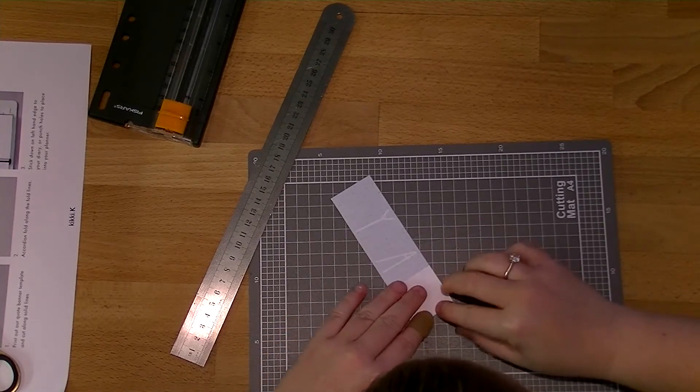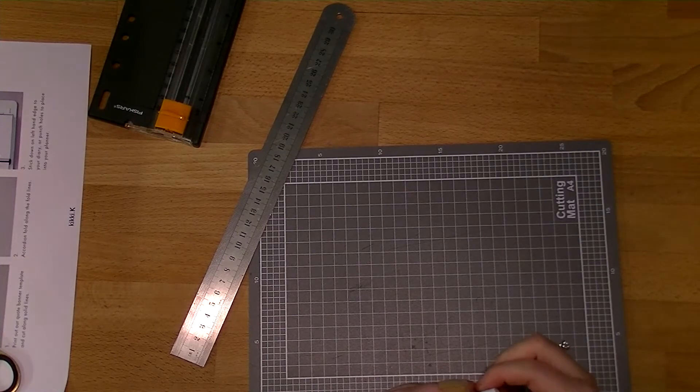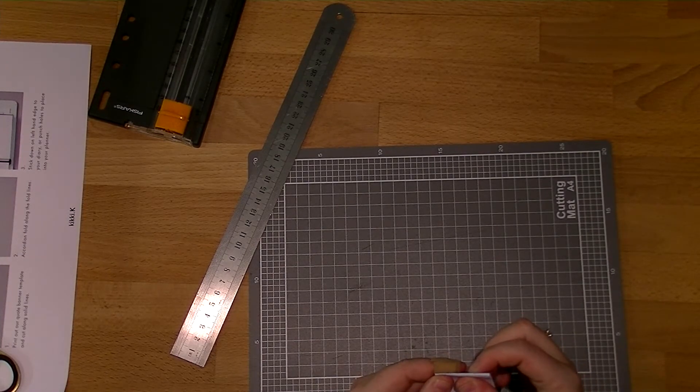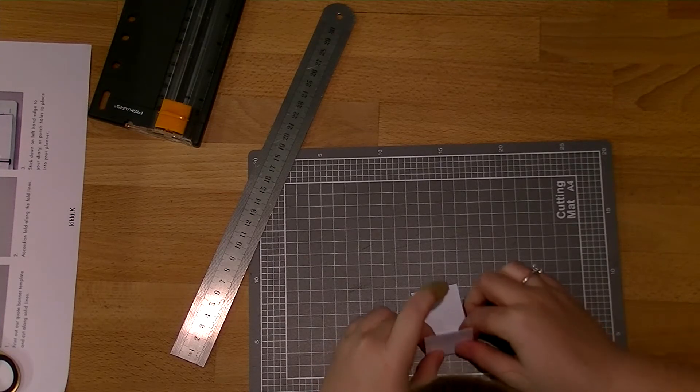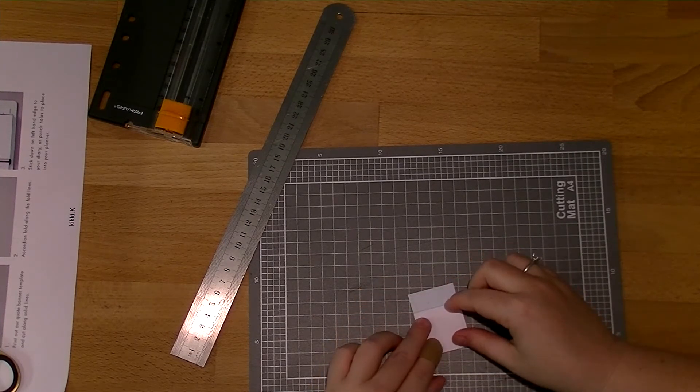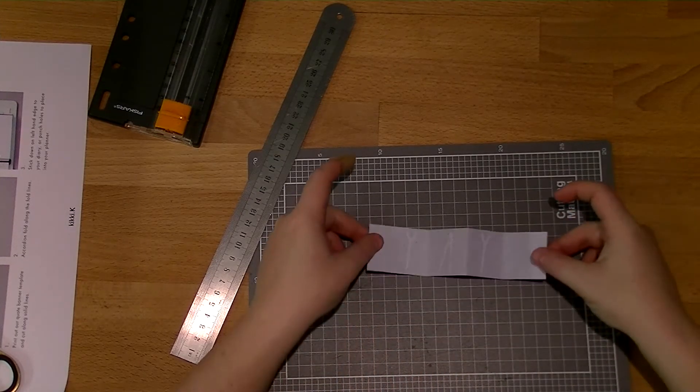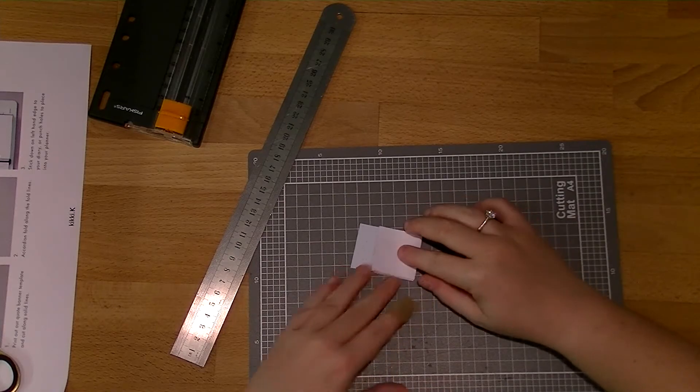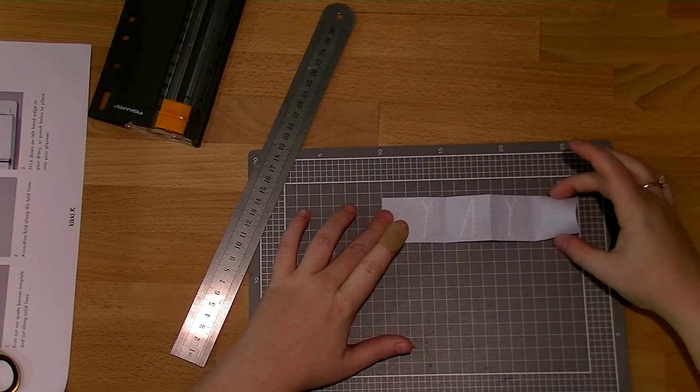So I'm just going to fold along those score lines just in that accordion style. Okay. And so it just sort of folds out like that. So you have it at the top or at the bottom of your page and then you sort of fold it out.